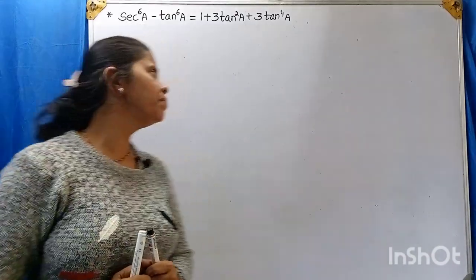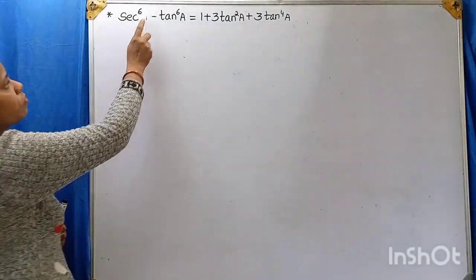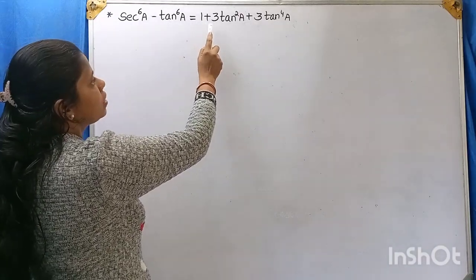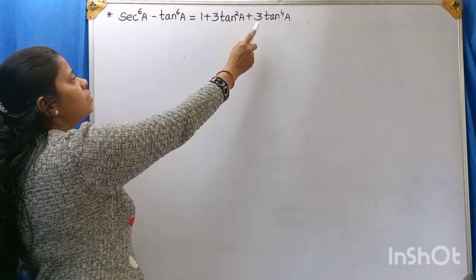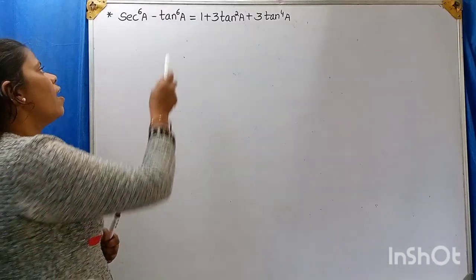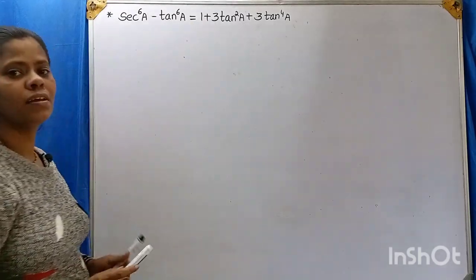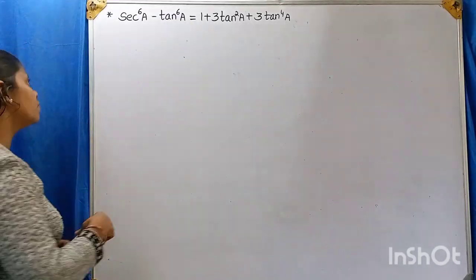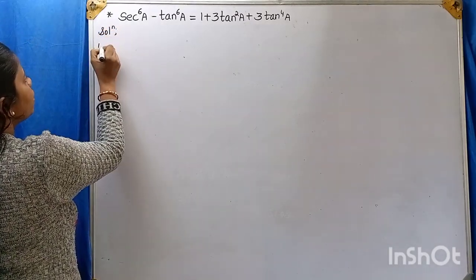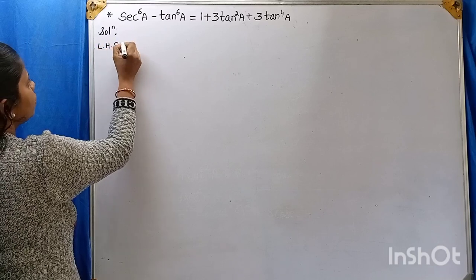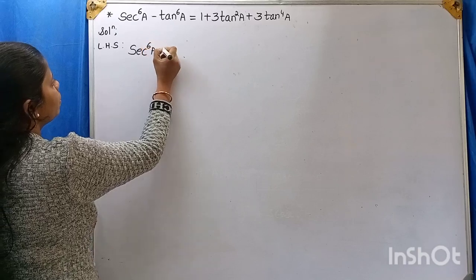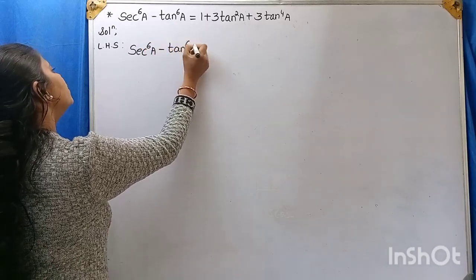Let's solve this problem. We need to prove that secant to the power of 6a minus tan to the power of 6a is equal to 1 plus 3 tan squared a plus 3 tan to the power of 4a. We have to prove that LHS is equal to RHS. Let me write down the LHS: secant to the power of 6a minus tan to the power of 6a.